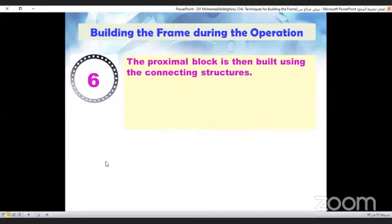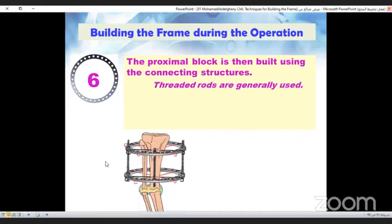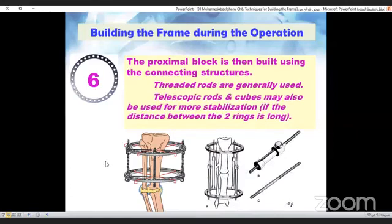Step six, connect the two rings using connecting structures to make the proximal block. We generally use threaded rods, but if more stabilization is required in longer distances, telescopic rods and cubes may also be used.